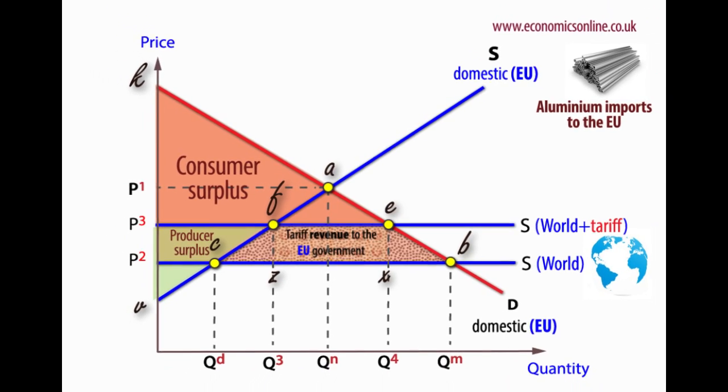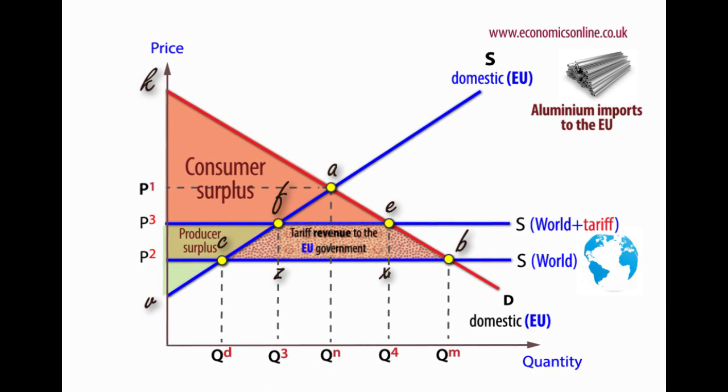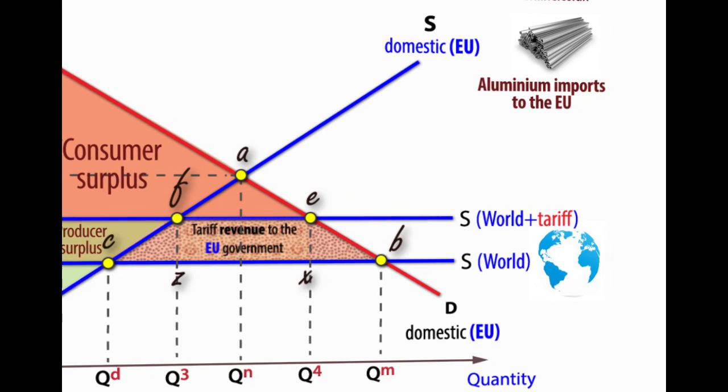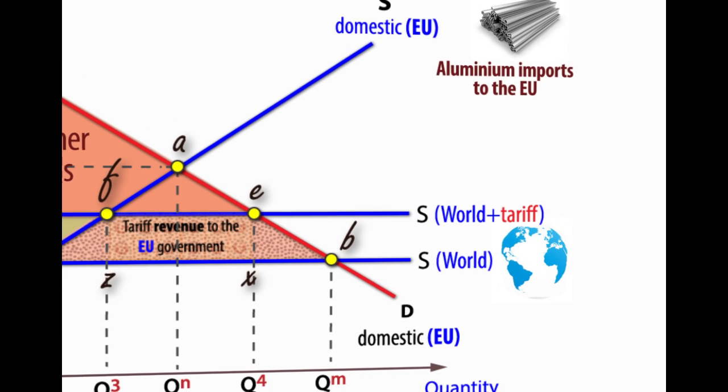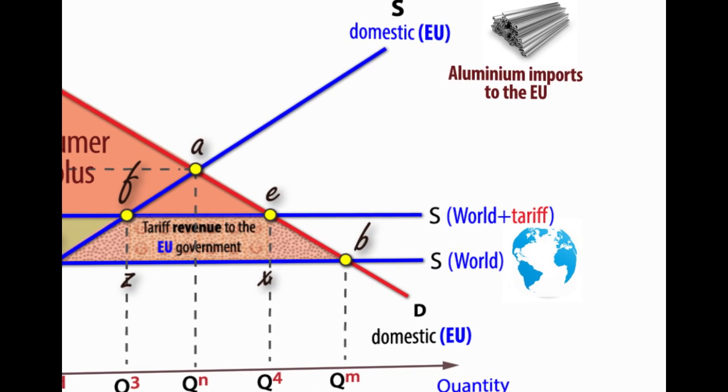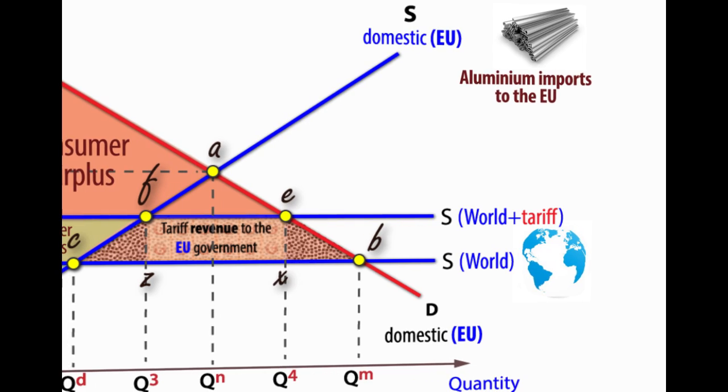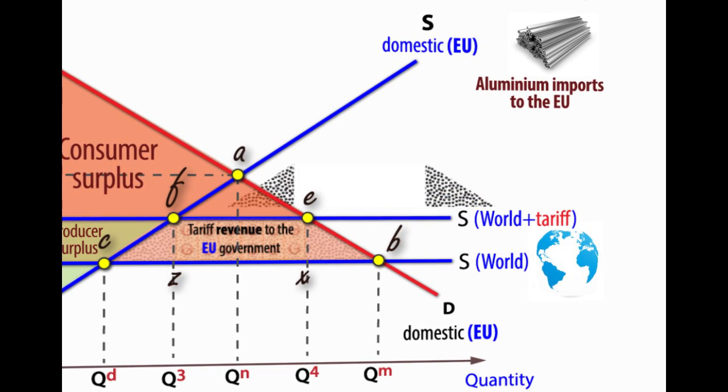However, the EU can gain tariff revenue, of the area F, E, X and Z. This is the volume of imports, Z to X, times the tariff per unit, which is F to Z, and E to X.